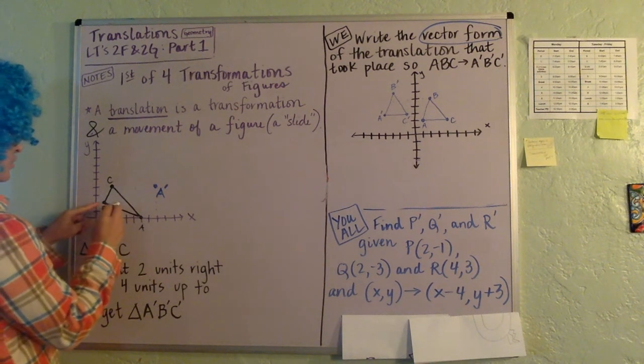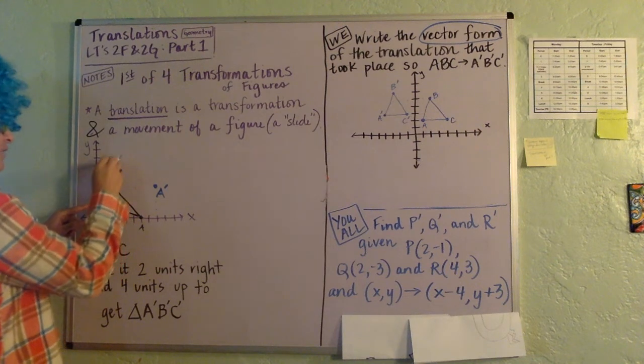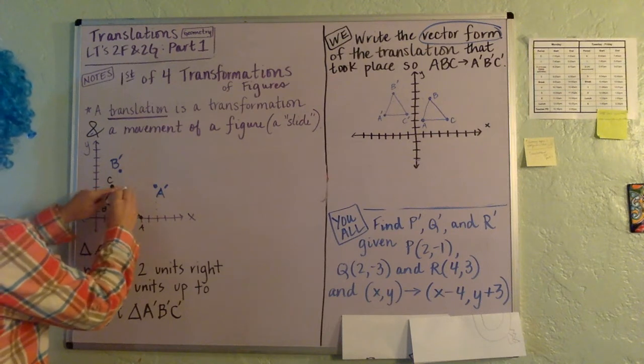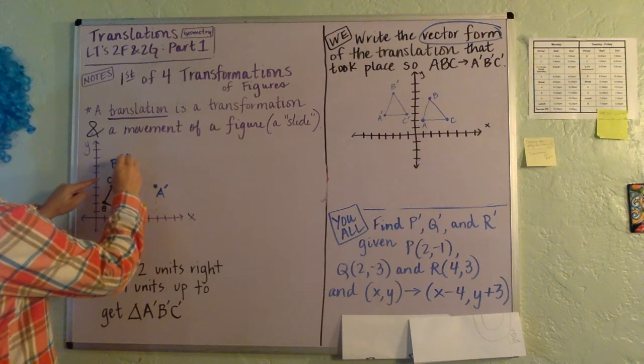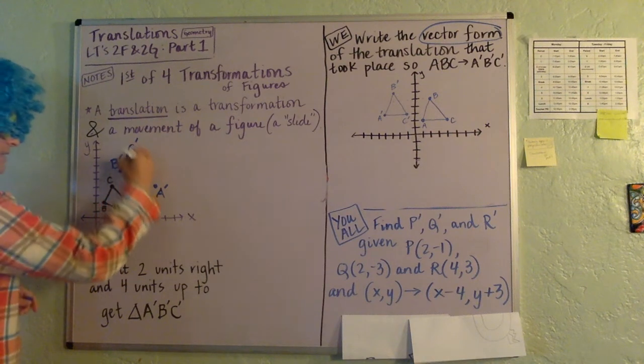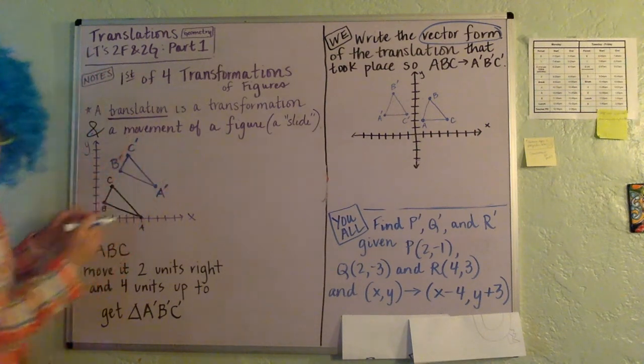So two over and four up, okay? And that's where B prime would be. And then if we do the same thing with the C, two over and four up, that's going to give us where the C prime is. And then you can see if we connect all of our vertices again, you can see that we've slid the figure, right?